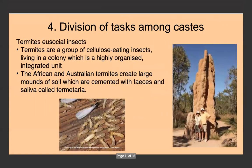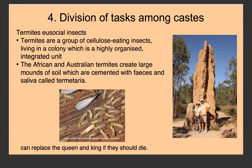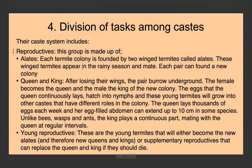Looking at division of tasks among castes with reference to termites: termites are cellulose-eating insects that live in a highly organized, integrated colony. African and Australian termites create large mounds of soil, cementing them with feces and saliva — called termitaria. They have a very strict caste system.